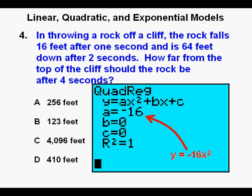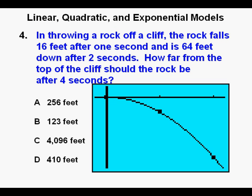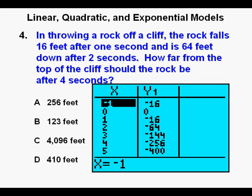Our function is Y equals negative 16X squared. We go to the function editor in Y equals and enter Y equals negative 16X squared. Press GRAPH. We see that it matches all three points. Now we'll go to the table view by pressing SECOND, then the GRAPH key.